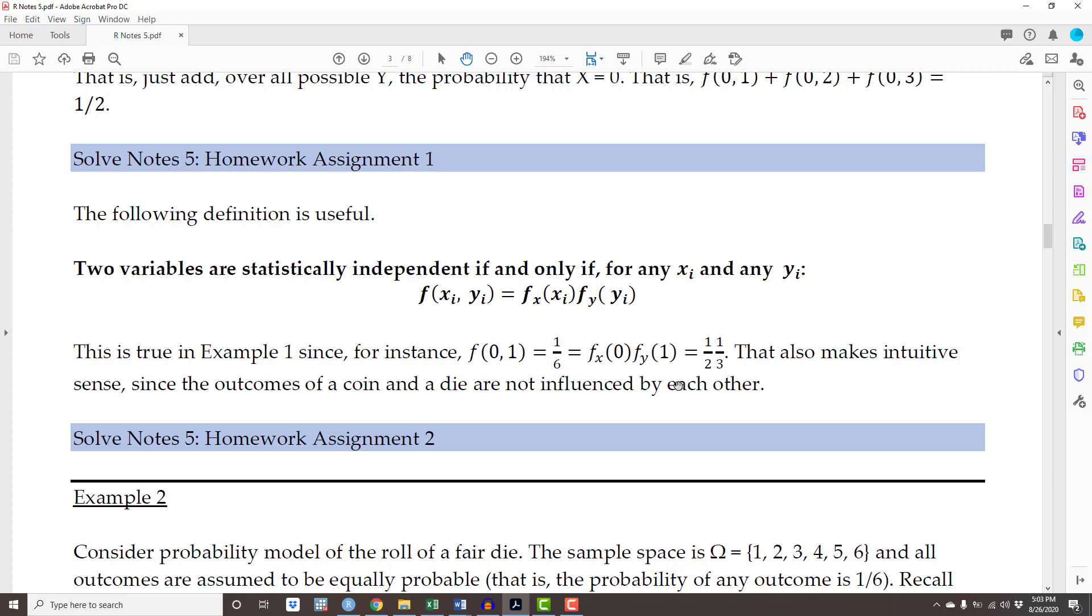But that leads to the following important question: Does the joint distribution equal the multiplication of the marginal distributions because the outcomes of a coin and a die are not influenced by each other? Or the other way around - the outcomes of a coin and a die are not influenced by each other, therefore the joint distribution equals the multiplication of the marginal distributions?